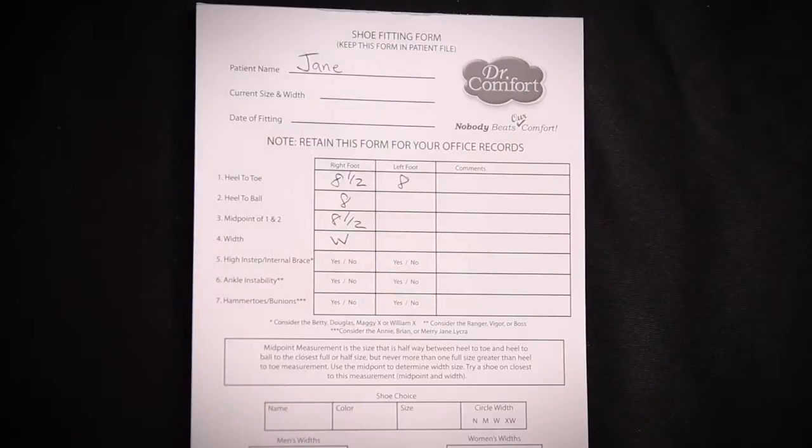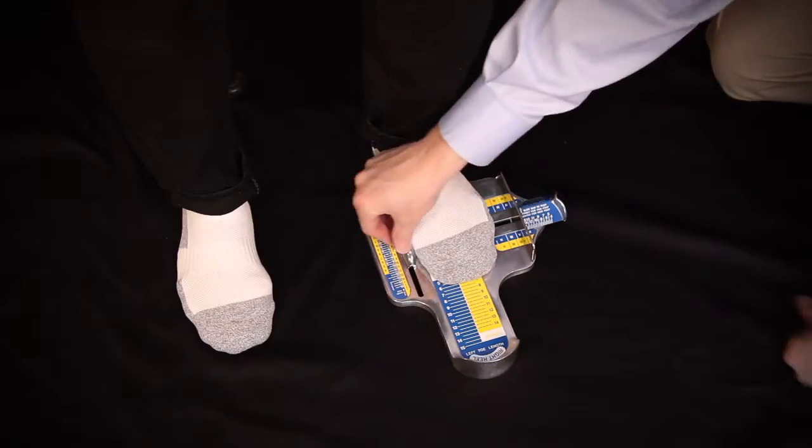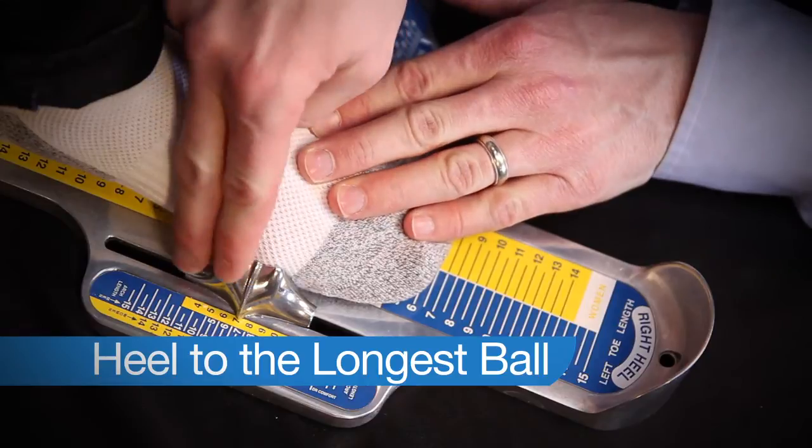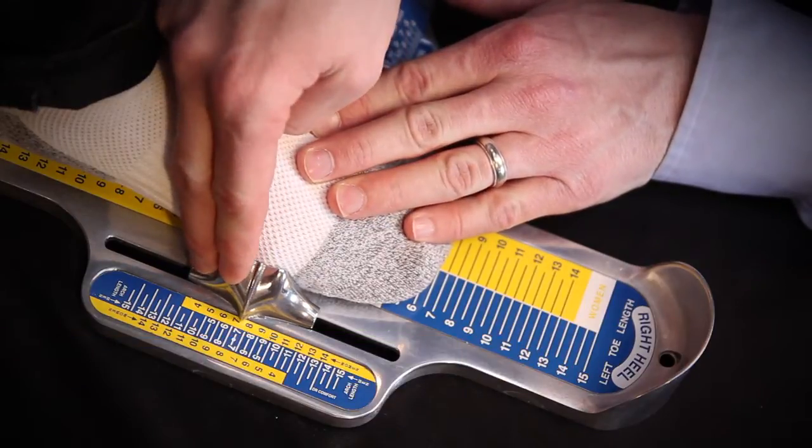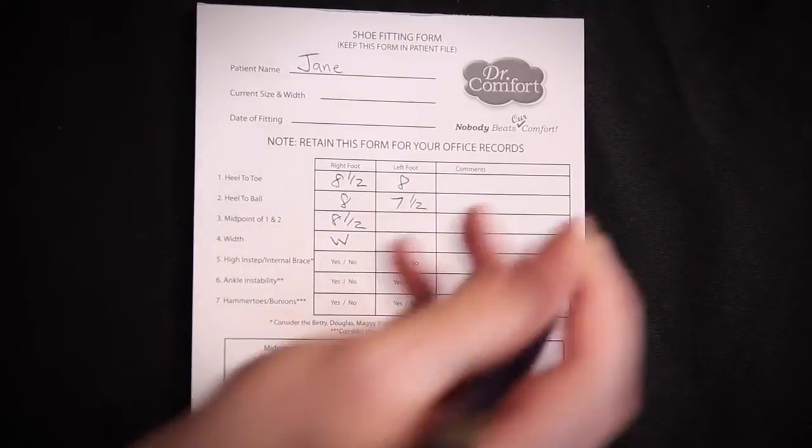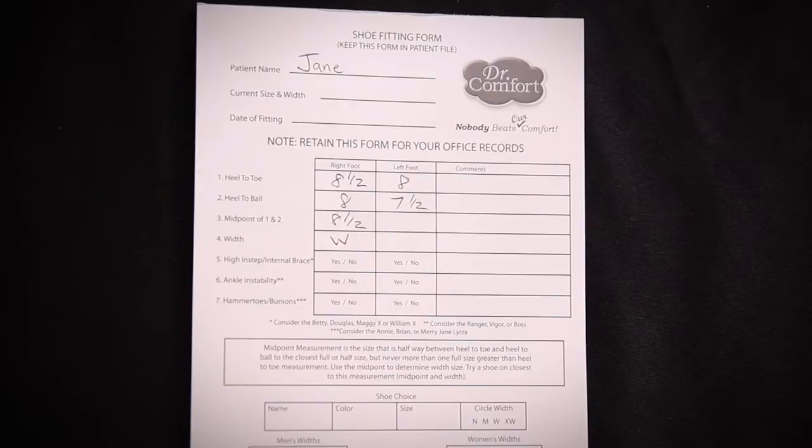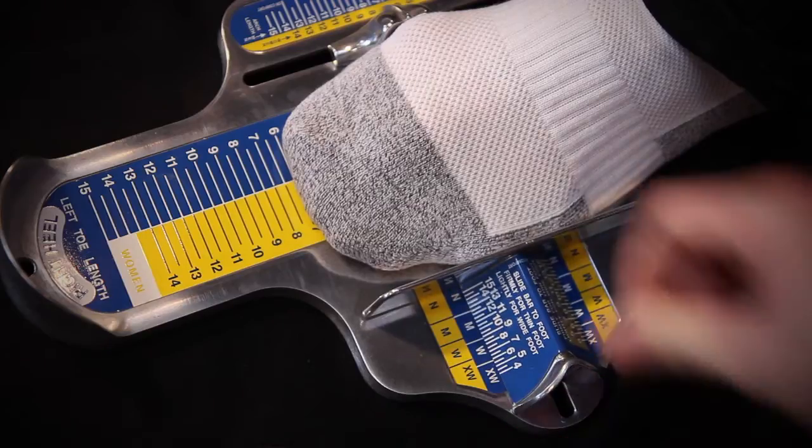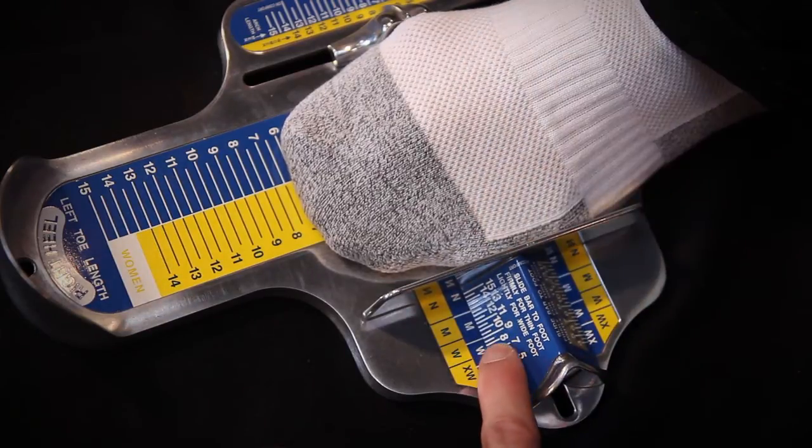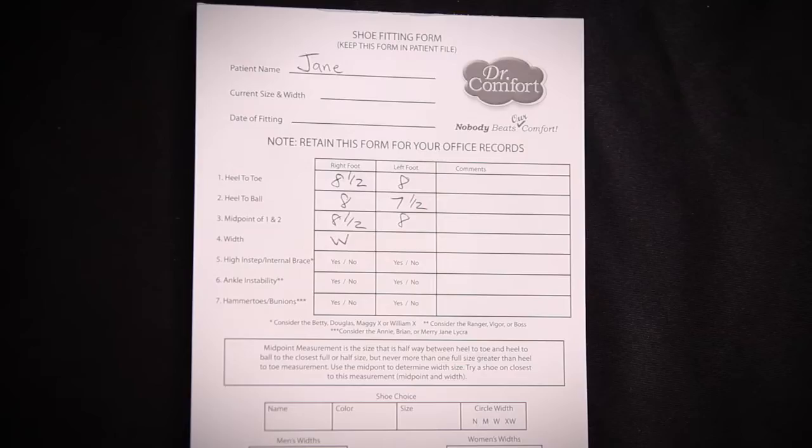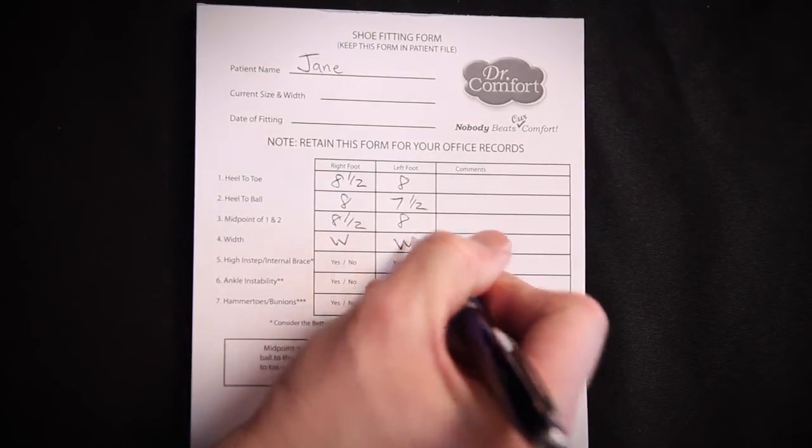The next measurement is the heel to the ball or the arch length and that happens to be a 7 1/2 with Jane. So the midpoint measurement for these two will be a size 8. You're taking 8 and 7 1/2 and in this case taking the larger of the two, which is size 8. Then I slide the sliding bar over to check the width of her foot. I follow the 8 straight down and the 8 also indicates she's a size wide.